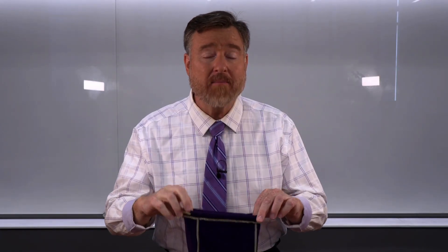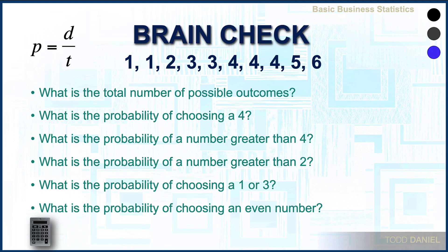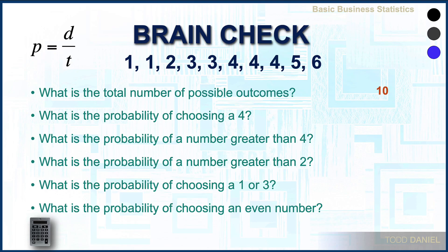Let's do something similar, only this time with numbers. We have a data set — in this bag are individual numbers. There are 10 possible outcomes; there are 10 values, 10 numbers in the bag. I'm going to reach in, pull out a number among the 10 possible numbers, and I got a 4. What is the probability of choosing a 4? There are three 4s in our data set, so 3 divided by 10 is 0.30.